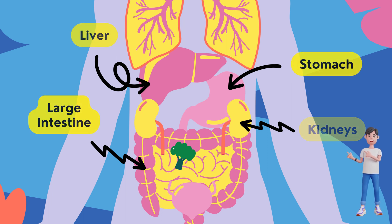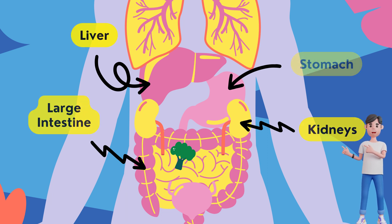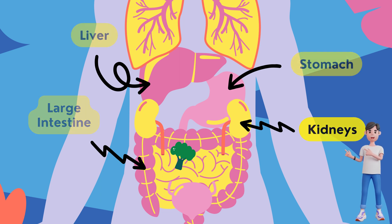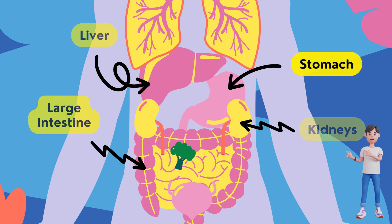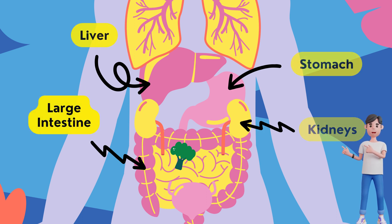Stomach. It produces enzymes, substances that create chemical reactions, and acids. This mix of enzymes and digestive juices breaks down food so it can pass to the small intestine.